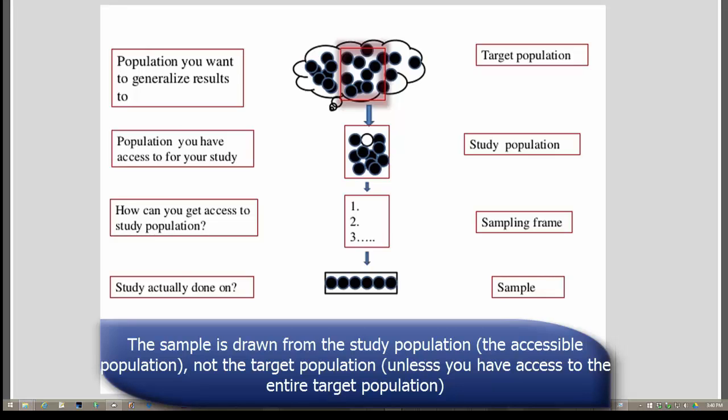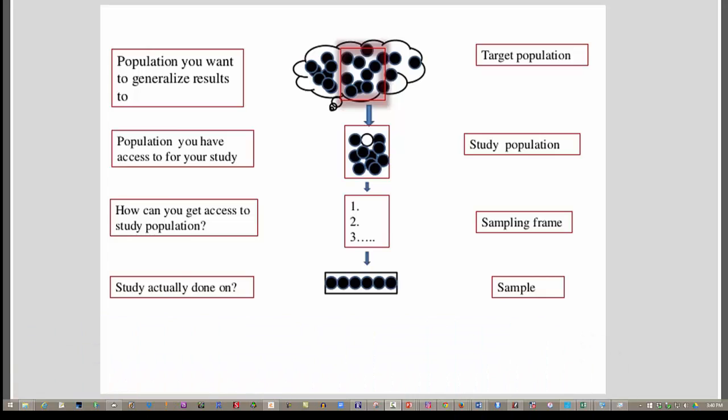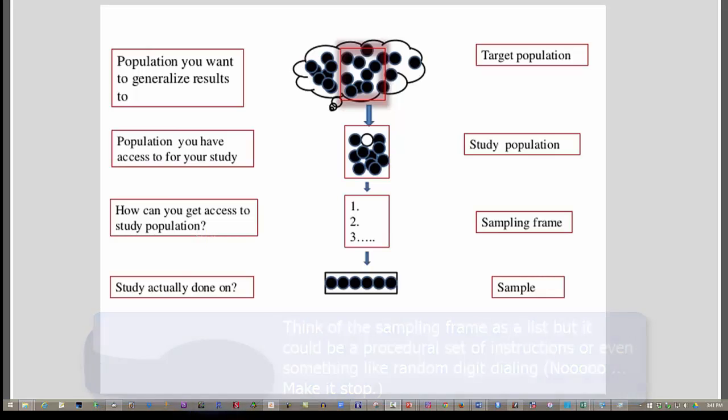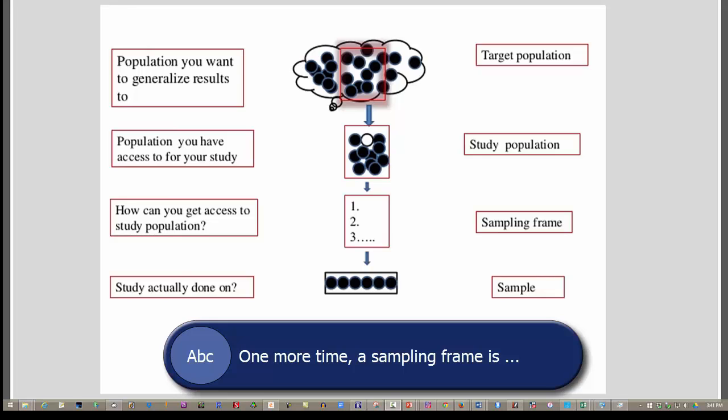Once we have that study population, we need to come up with a sampling frame. The easiest way to think about that is just a list of people from whom we would select our random sample - essentially a list of everybody in the study population.